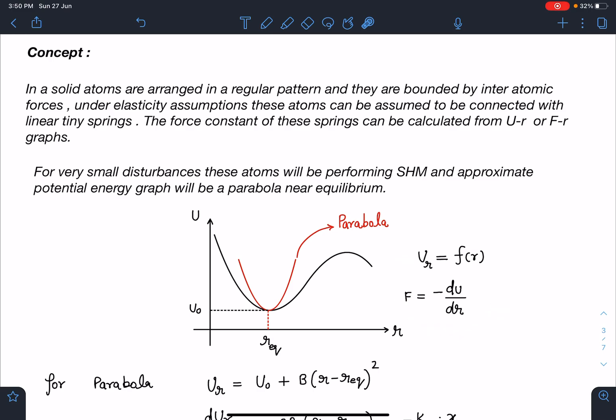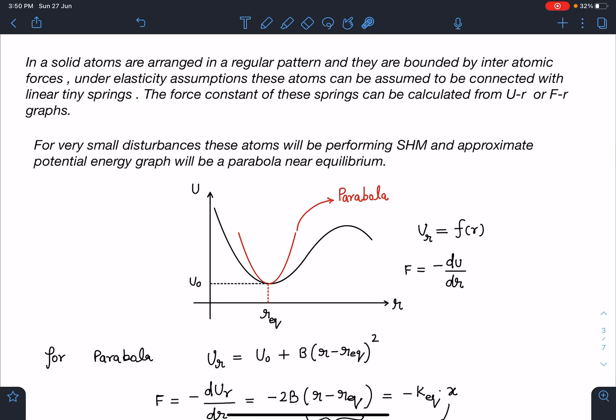For any general function of U and F, this concept remains the same. At equilibrium, we can calculate by putting force equal to zero. So let's say we know the equilibrium and in equilibrium, potential energy value is U₀. So I can write this equation of this parabola as Ur = U₀ plus B times some constant, r minus r_eq whole square.